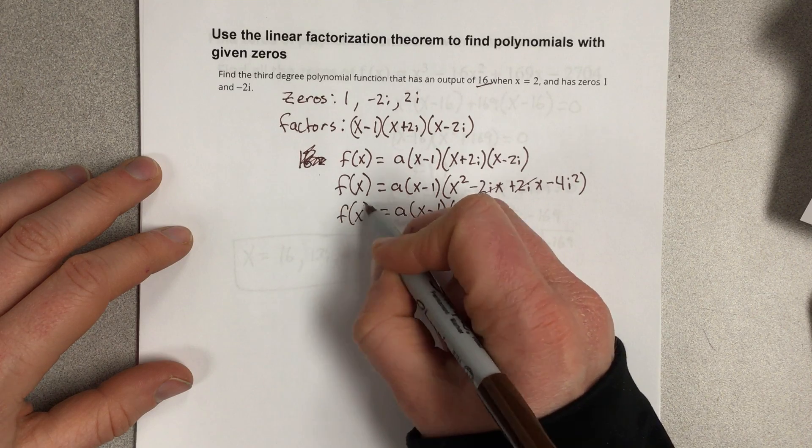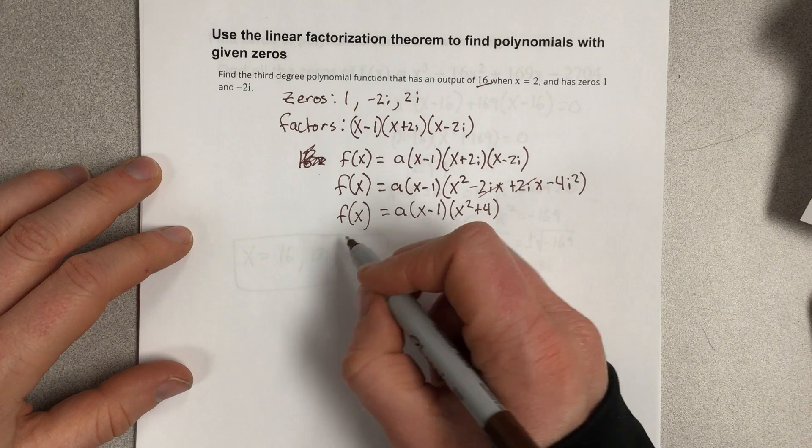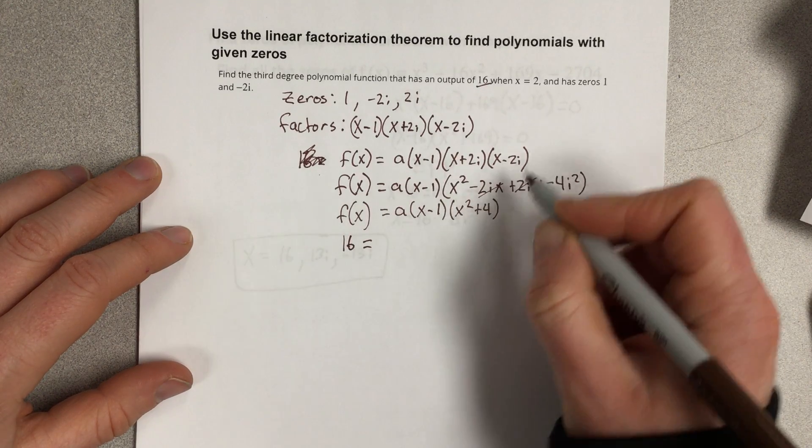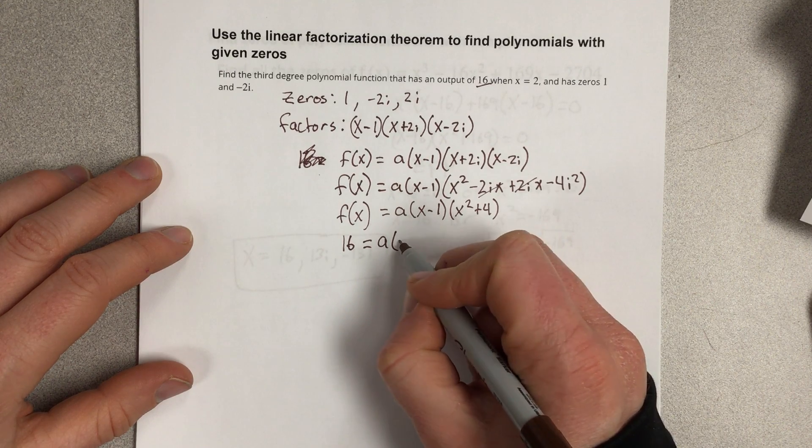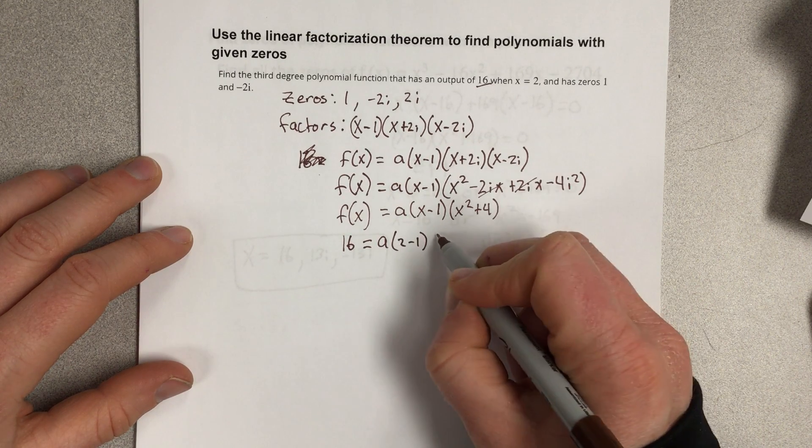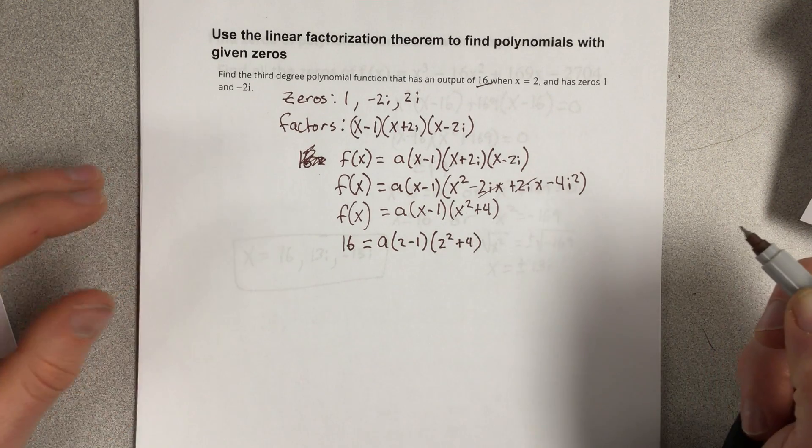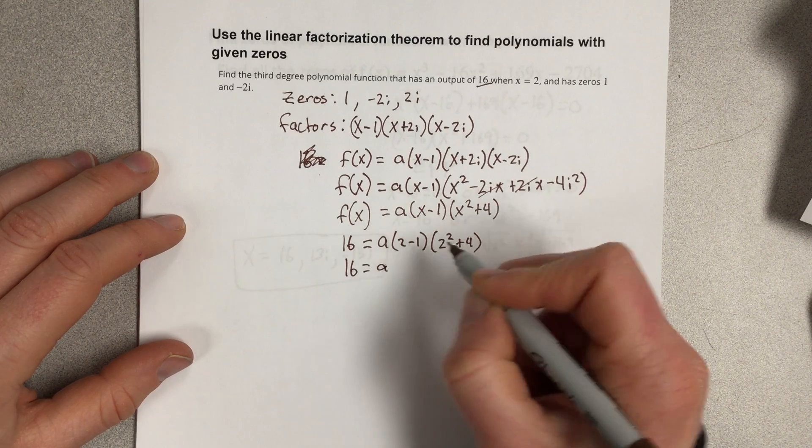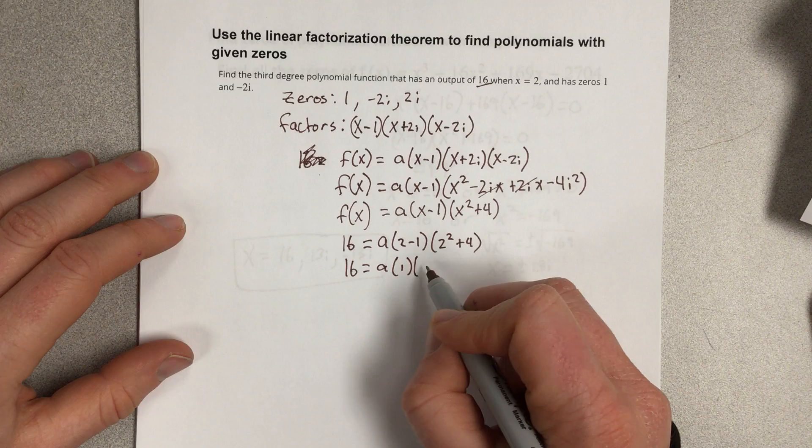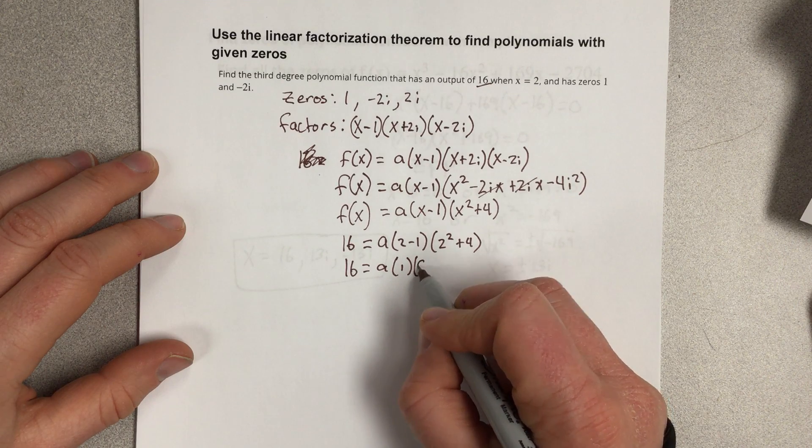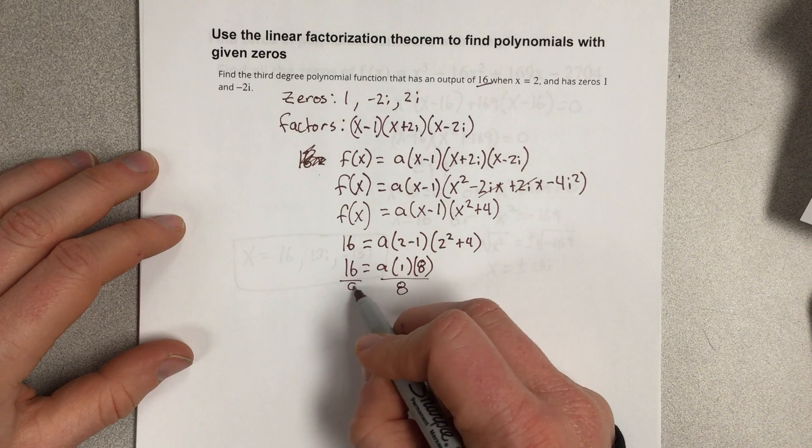And they tell me in the problem that 16 is the output when our input is 2. So I can say that that's a times 2 minus 1, and then 2 squared plus 4. Well, that's 16 equals a times 1 times 8. Let's divide by 8 on each side, and it tells us our leading coefficient is 2.